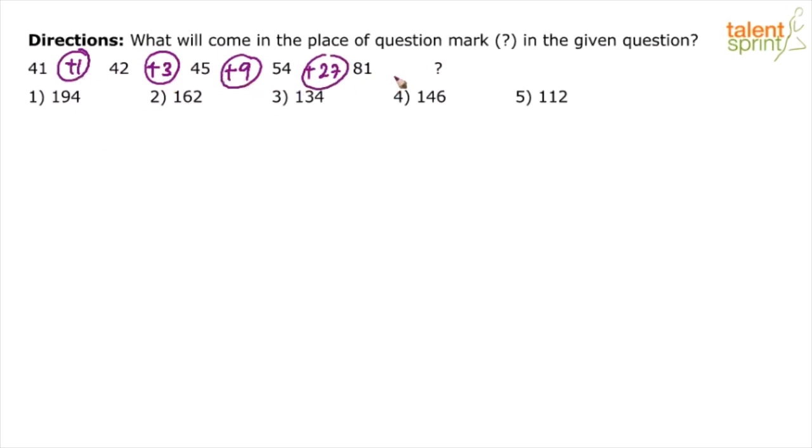So if you see the differences here: 1, 3, 9, 27. So what should be the next one? Next one should be 81. Why? See, these are all powers of 3 actually. This is 3 power 0, 3 power 1, 3 power 2, this is 3 power 3. So obviously the next one has to be 3 power 4, which is 81. So what will come in place of question mark? 81 plus 81, which is 162, option 2.